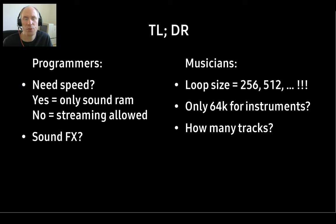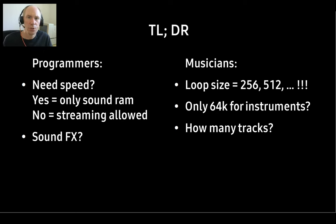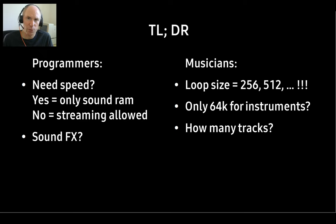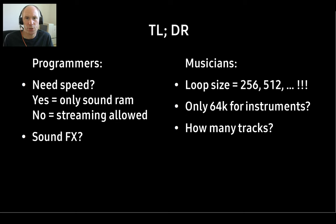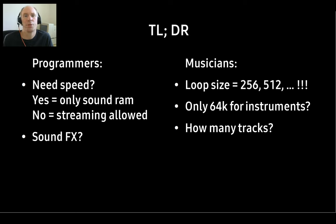To sum up: programmers need to figure out what they need music for. If you are drawing a lot to the screen, better choose music that fits into sound RAM. Also consider whether you need extra space for sound effects and extra oscillators to play them. Musicians, on the other hand, want to make sure the loop size is of an ideal length, always. Your programmer will let you know if you have to squeeze all instruments into 64K or not. You'll also have to talk about the number of tracks you may use — the GS has many, so use them.